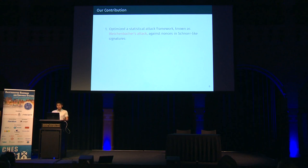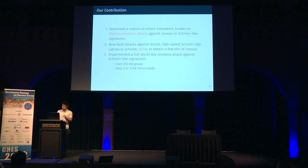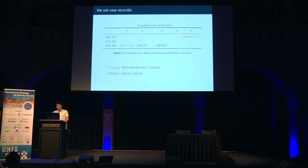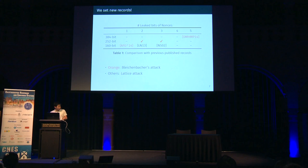Our contribution can be summarized as follows. First, we optimized the statistical attack framework known as Bleichenbacher's attack against nonces in Schnorr-like signatures. Second, we proposed new fault attacks against QDSA to obtain a few bits of nonces. Combining these two contributions, we implemented a full secret key recovery attack against Schnorr-like signatures instantiated over a 252-bit group using only two or three-bit nonce leaks. These targeted parameters have set new records in the implementation of Bleichenbacher's attack, solving the three-bit leak case and the much harder two-bit leak case — parameters never broken before.